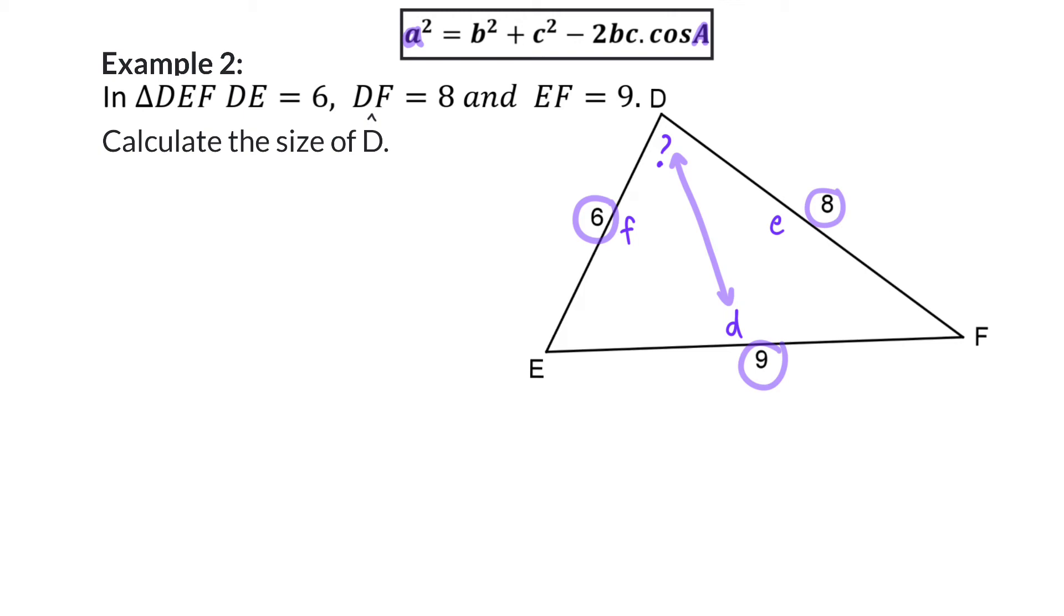So when rewriting this cos rule, we will start with side D squared on the left, and that will be equal to the sum of the other two sides squared, so E squared plus F squared, minus two times the product of the other two sides, multiplied by cos of angle D. Now we can substitute our information, and we were given that D is 9, E was given as 8, and F as 6. Then we subtract 2 times E multiplied by F, and that multiplied with cos of D.